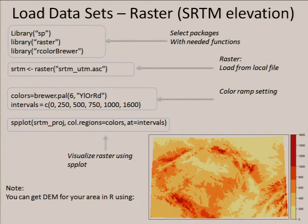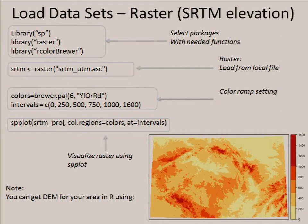Our first example shows how we can load a raster data set in R. At the start we have the library command, which selects the needed functions. Then we have a local file with the elevation data. Next we set the color ramp, and last we can plot it on the screen using that color ramp. Also in R there is a useful function which allows you to get elevation data for your area of interest directly from the web.